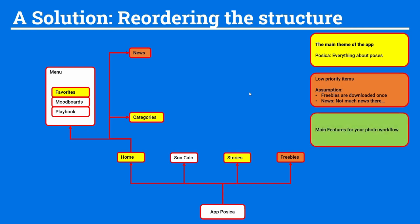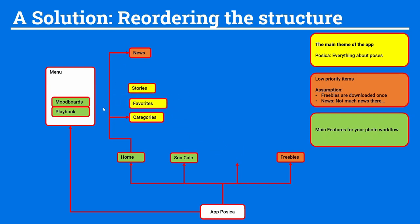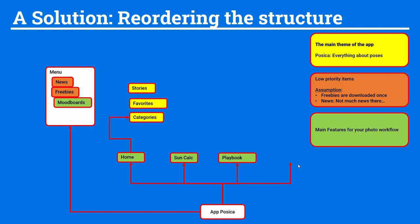The main features for your photo workflow are the poses in the home tab, the sun calculator, the playbook, and the mood boards. Next, let's talk about the menu — why is it only accessible from the home tab? We have important features like the mood board and playbook there. The mood board is a premium feature, so why is it hidden? It should be accessible from everywhere. Everything that belongs to poses goes in the home tab, and low priority items go in the menu, while the main features move into the main architecture.